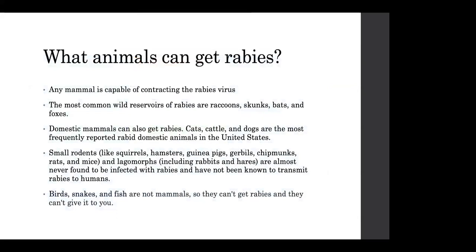So what animals can get rabies? It's very important to know which animals are capable of contracting the rabies virus to determine the risk for your patient. The most common wild reservoirs of rabies are raccoons, skunks, bats, and foxes. However, domestic animals can also get rabies — cats, cattle, and dogs are the most frequently reported rabid domestic animals in the U.S. Small rodents like squirrels, hamsters, guinea pigs, and lagomorphs such as rabbits and hares are almost never found to be infected with rabies and have not been known to transmit rabies to humans. But any mammal is capable of contracting the rabies virus. Birds, snakes, and fish are not mammals, so they cannot get rabies and they cannot give it to you.